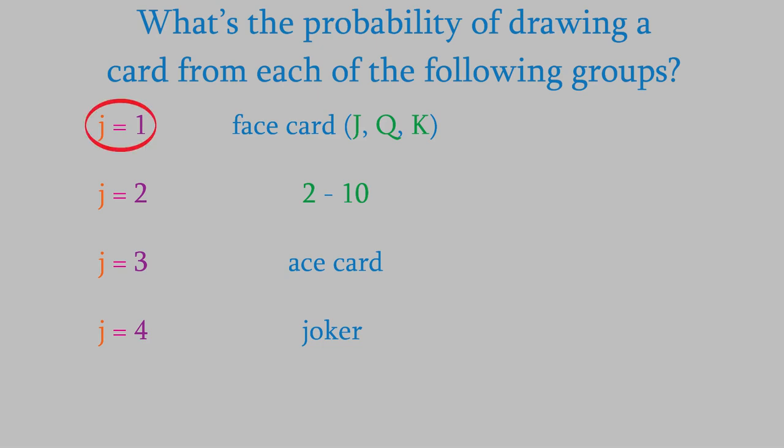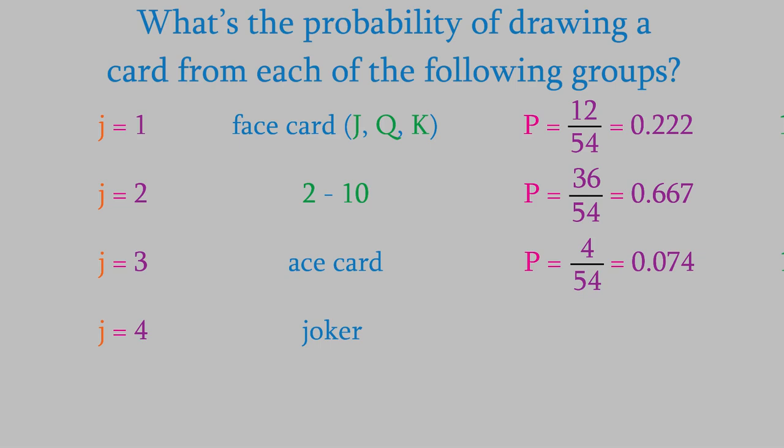First, let's think about group 1. There are 12 face cards in a deck, and the deck contains 54 cards. Remember, this deck includes two jokers, so the deck has 54 cards and not 52. To determine the probability, we divide the number of face cards by the total number of cards. So, that's 12 divided by 54, which is 0.222. We follow a similar procedure for the other three groups. There are 36 cards with a value between 2 and 10, so the probability of drawing one is 36 divided by 54, which is 0.667. Next, there are 4 aces, so the probability of getting an ace is 4 over 54, or 0.074. And the probability of getting a joker is 2 over 54, or 0.036.